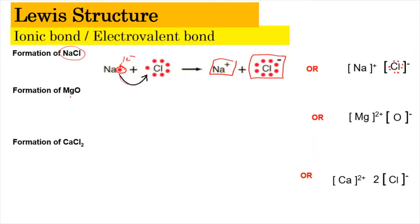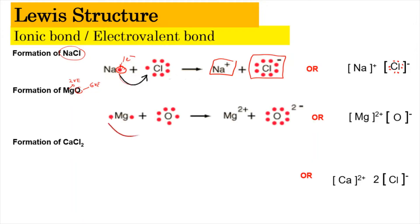Similarly, for magnesium oxide: magnesium has two valence electrons and oxygen has six valence electrons. So two valence electrons from magnesium need to be transferred to oxygen — one electron transferred to one side and another to the other side — giving oxygen eight valence electrons altogether, forming a stable octet arrangement. This gives us Mg²⁺ and O²⁻.